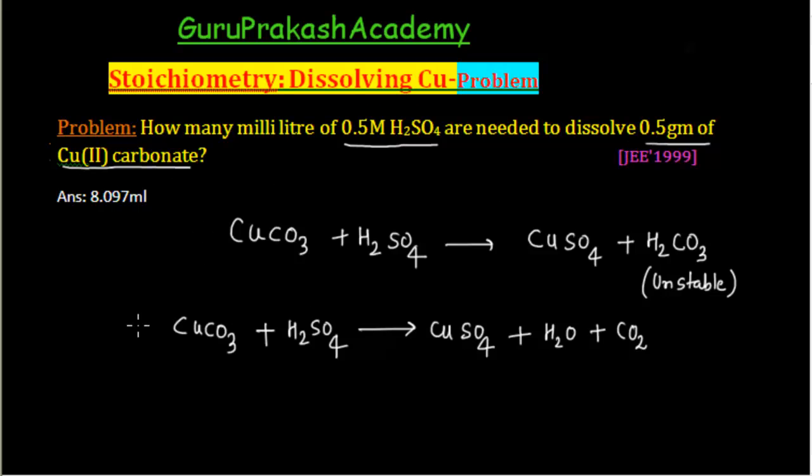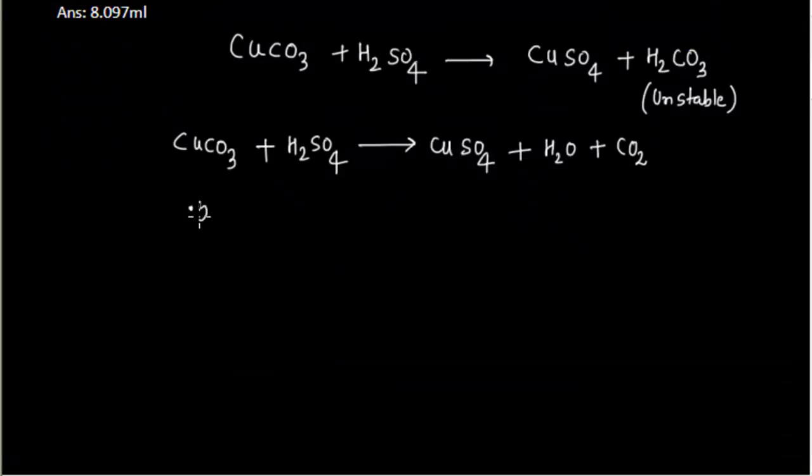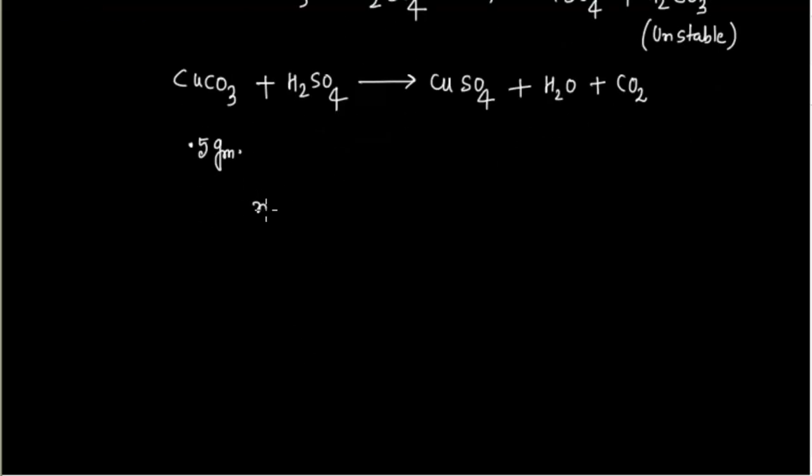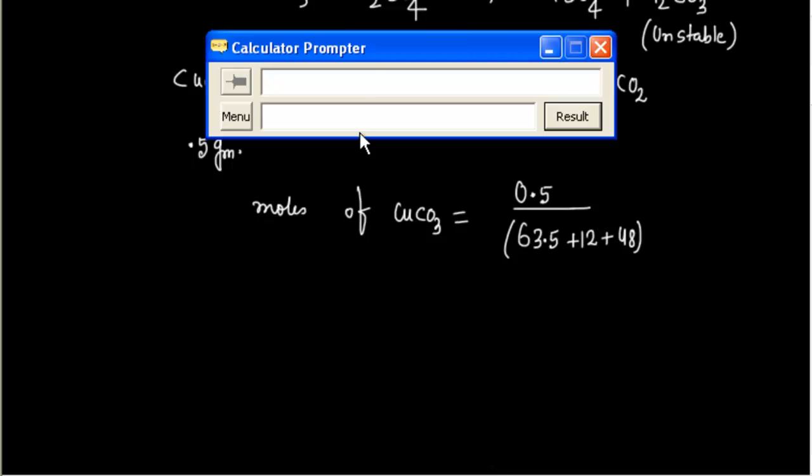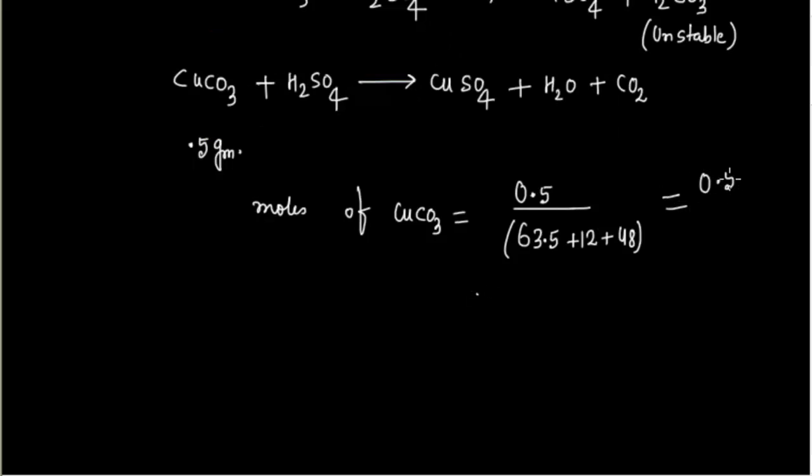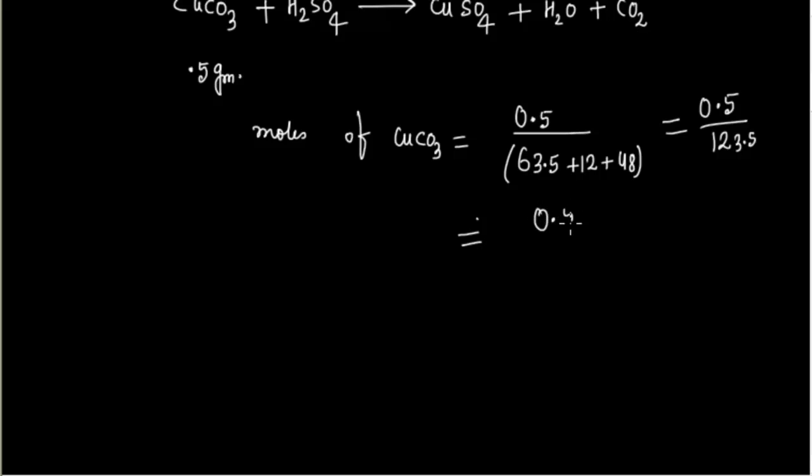We have been given 0.5 grams of copper(II) carbonate. We can calculate moles of CuCO3. Moles equals weight divided by molecular weight. The molecular weight is 63.5 plus 12 plus 48, which is 123.5. So moles of CuCO3 equals 0.5 divided by 123.5.